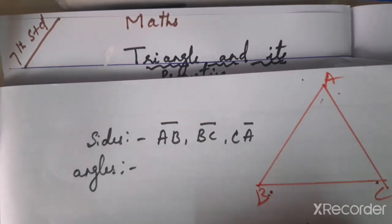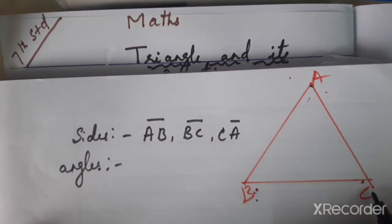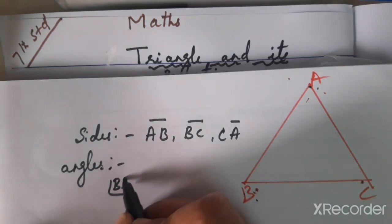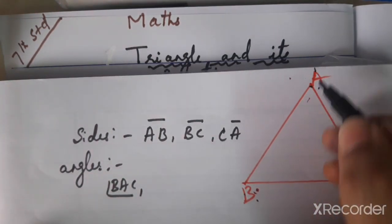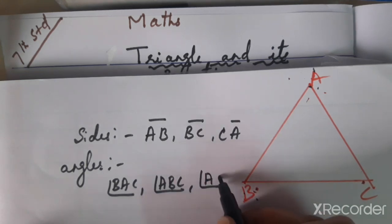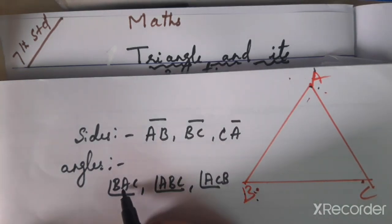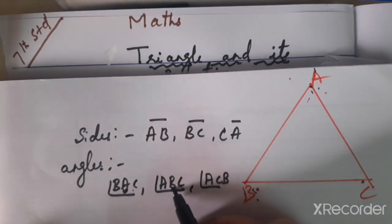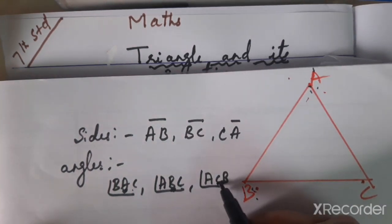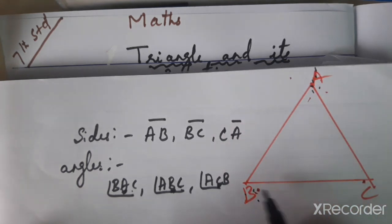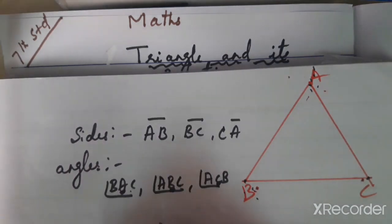The angles of a triangle are angle A, angle B, and angle C. To write an angle of a triangle: angle BAC means the center letter indicates the angle. So BAC means we are talking about angle A, ABC means we are talking about angle B, and ACB means we are talking about angle C. The center letter always indicates which angle we are referring to.